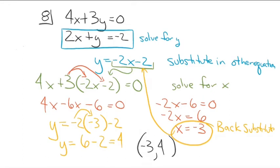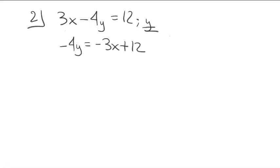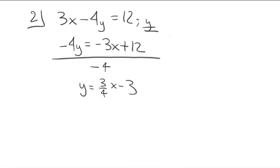Someone asked me to do problem 2. The direction says: solve for the indicated variable — in this case, solve for y, meaning get y by itself. Move the x-terms to the other side by subtracting, then divide everything by negative four. That gives you the answer for problem 2.